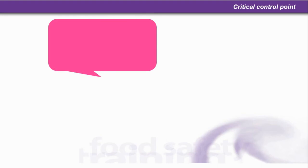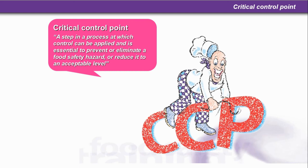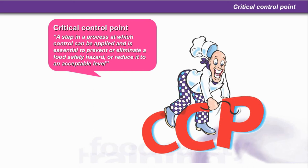Critical control point — let's look at the definition. It's a step in a process at which control can be applied, and is essential to prevent or eliminate a food safety hazard, or reduce it to an acceptable level.